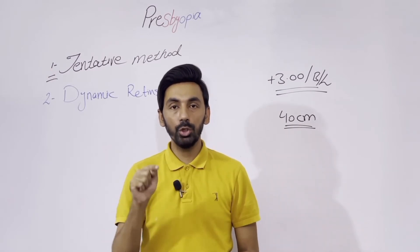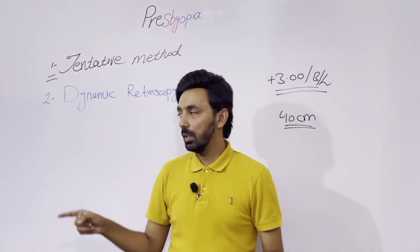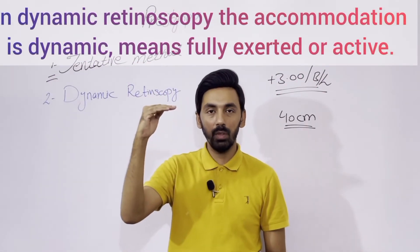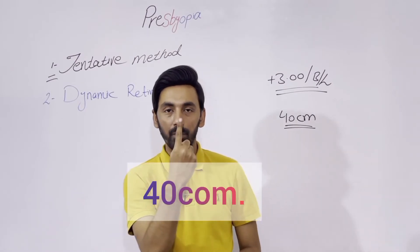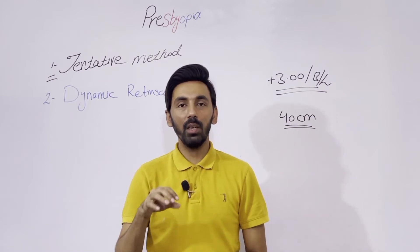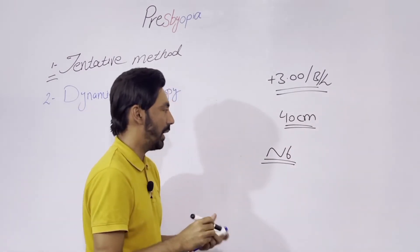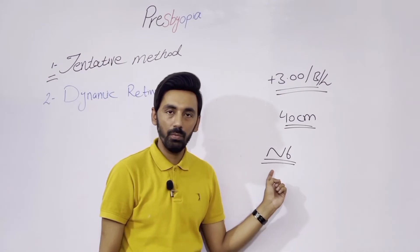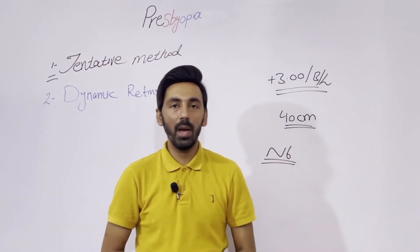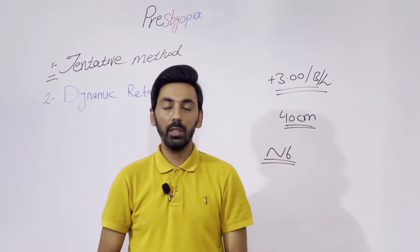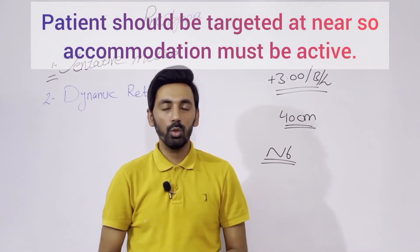In dynamic retinoscopy, the accommodation of the patient should be at its maximum. The target for the patient should be at near — more or less at 40 centimeters — and the patient will look at the smallest line, which is N6. When the patient looks at N6, accommodation is at maximum. We perform retinoscopy at 40 centimeters. At presbyopic age, accommodation is almost gone, but the patient is still targeted at near, at 40 centimeters.